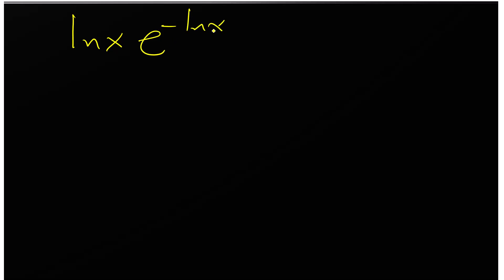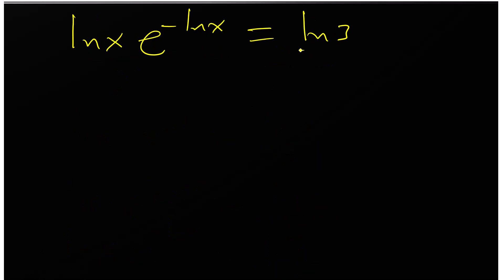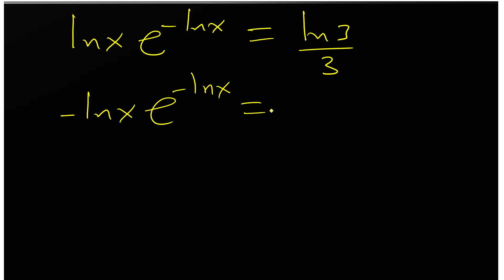So we have ln(x) times e to the negative ln(x) equals ln(3) over 3. But we need to balance the signs. We multiply both sides by negative one, giving us: negative ln(x) times e raised to negative ln(x) equals negative ln(3) over 3. Now both sides are in the proper W function form.